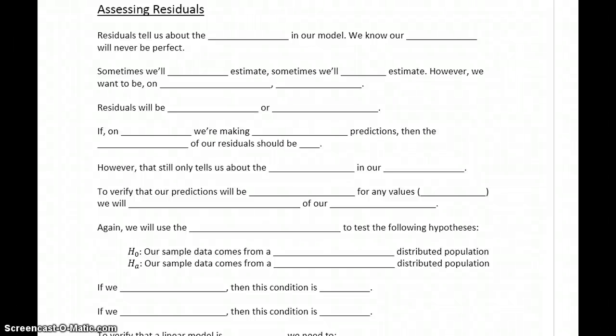The second condition we need to verify, assuming we have concluded that our populations have a linear trend, is that our residuals need to come from a normally distributed population. Keep in mind that residuals tell us about the error in our model, and we know that our predictions are never going to be perfect.